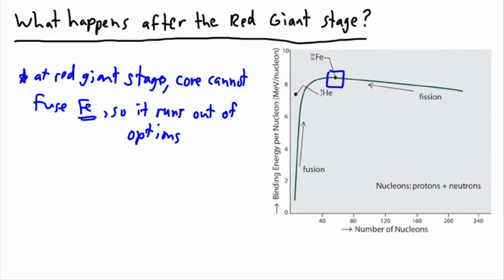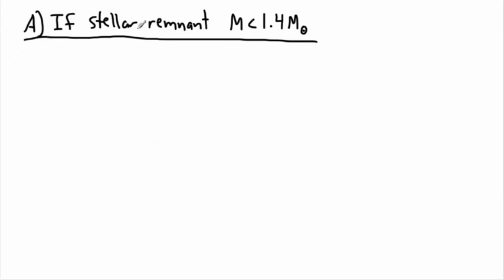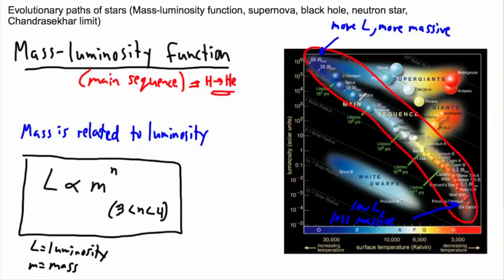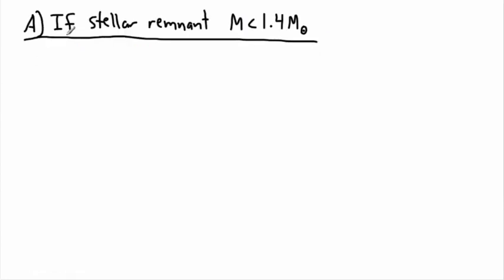If the remaining part of the star — the stellar remnant — has a mass less than 1.4 solar masses, then it ends up as a white dwarf. A vast majority of stars end up there. It all depends on what their own mass is. So it turns out if the stellar remnant — the remaining stuff left over from that red giant — is less than 1.4 solar masses, that determines what happens next.